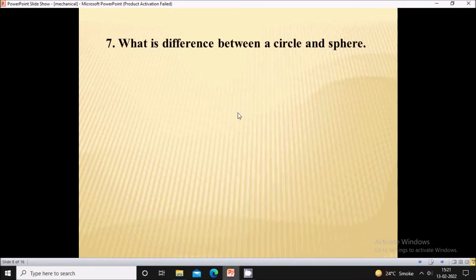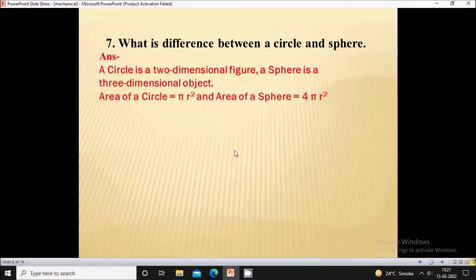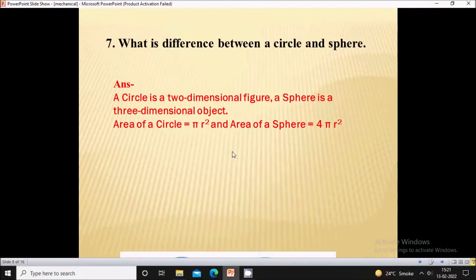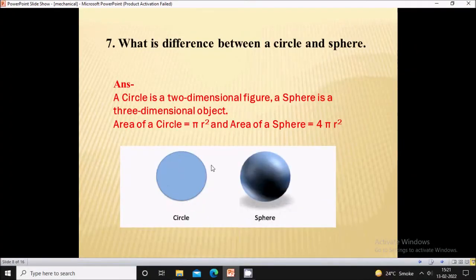Seventh question: what is the difference between a circle and a sphere? A circle is a two-dimensional figure while a sphere is a three-dimensional object. Circle has area but does not have volume, but sphere has both area and volume. Area of circle is π r² and area of sphere is 4π r².